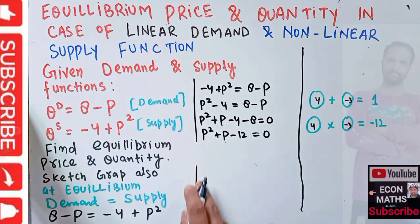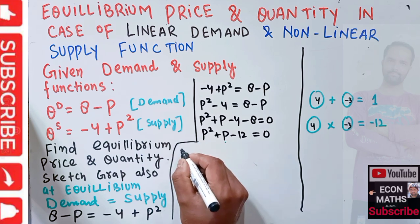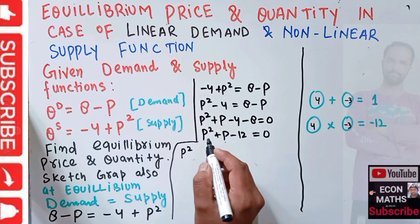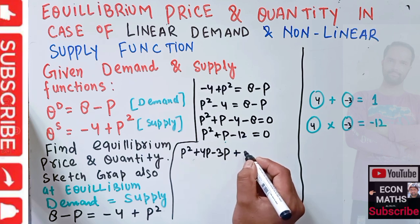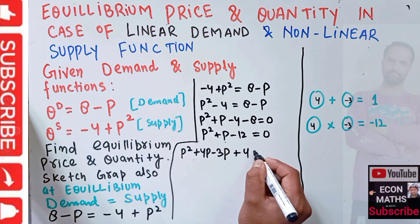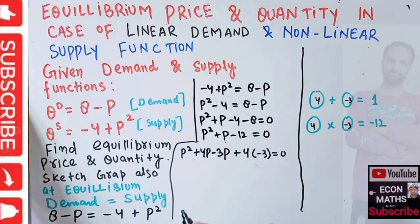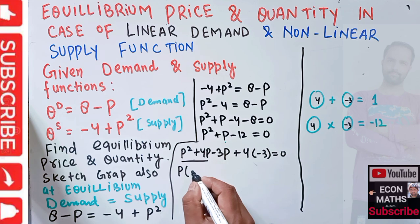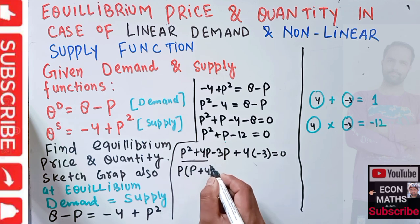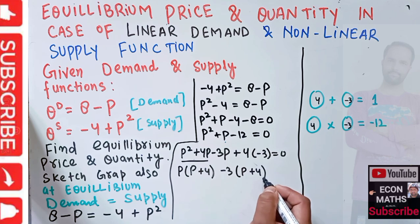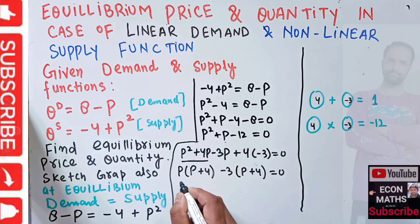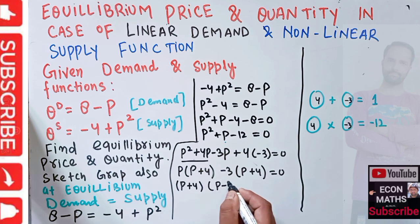So we can write P² + 4P - 3P - 12 = 0. Taking P common in the first two terms gives P(P + 4), and taking -3 common in the last two terms gives -3(P + 4), equal to 0. Taking (P + 4) common, we get (P + 4)(P - 3) = 0.